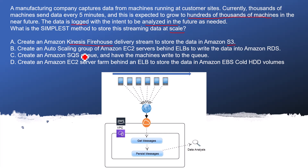Option B: Create an Auto Scaling group of Amazon EC2 servers behind an ELB to write the data into Amazon RDS. This is an incorrect answer because we cannot save unstructured data into RDS.